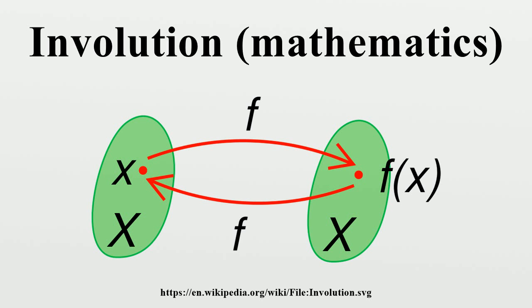Linear algebra: In linear algebra, an involution is a linear operator T such that T squared equals the identity. Except for in characteristic 2, such operators are diagonalizable with 1s and minus 1s on the diagonal. If the operator is orthogonal, it is orthonormally diagonalizable.